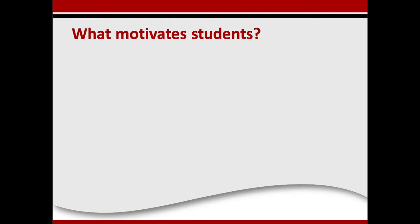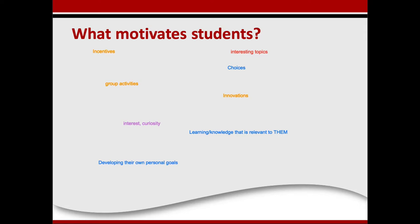This is a whiteboard activity. Take a moment and think about what motivates students — off the top of your head. Type your answer on the whiteboard. Responses include: group activities, incentives, choices, curiosity, developing their own personal goals, interesting topics, innovations, and learning knowledge that is relevant to them. That's outstanding — a really good mix of different aspects of motivation. What's going to connect with the students and keep them engaged in your class?